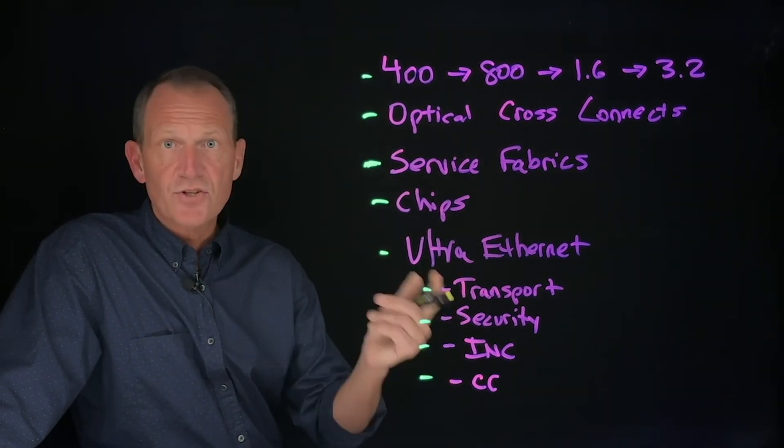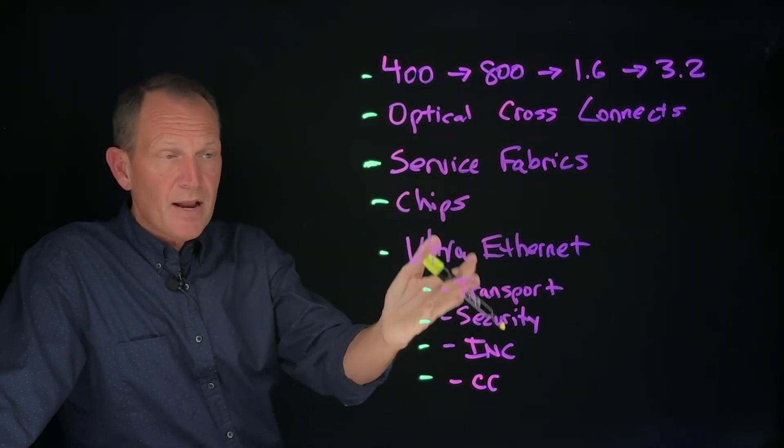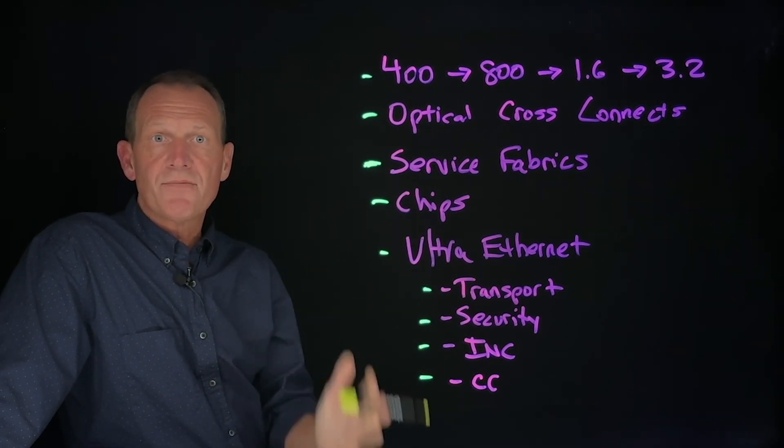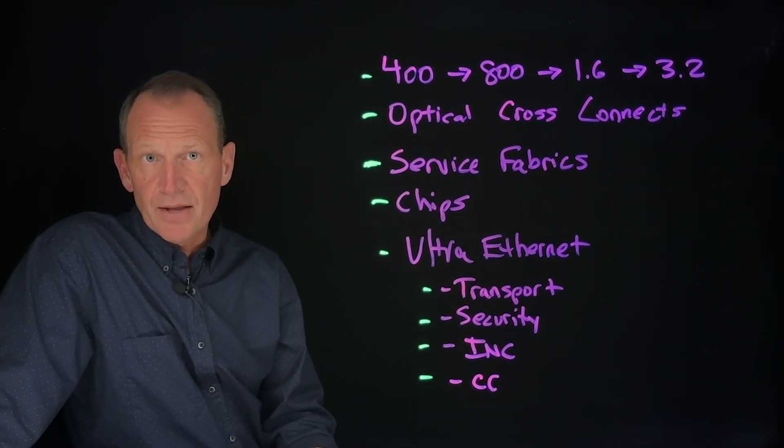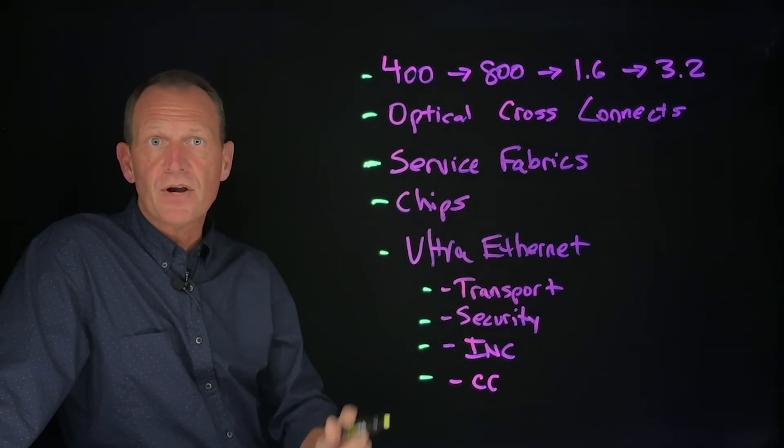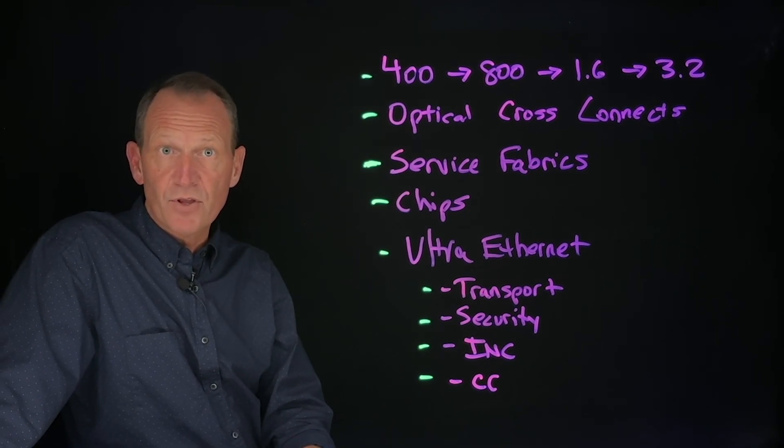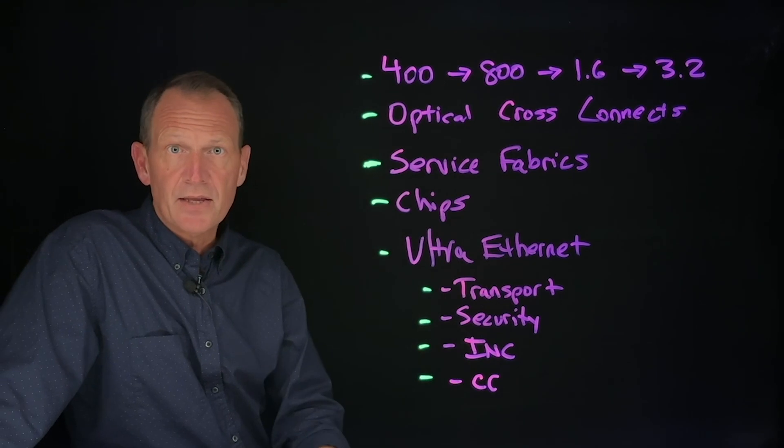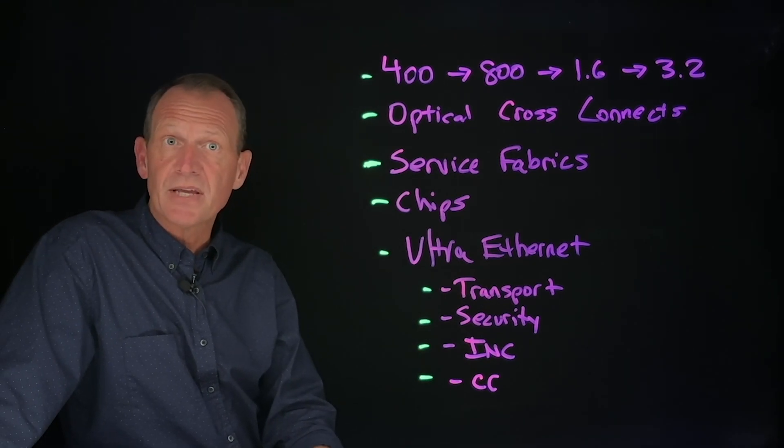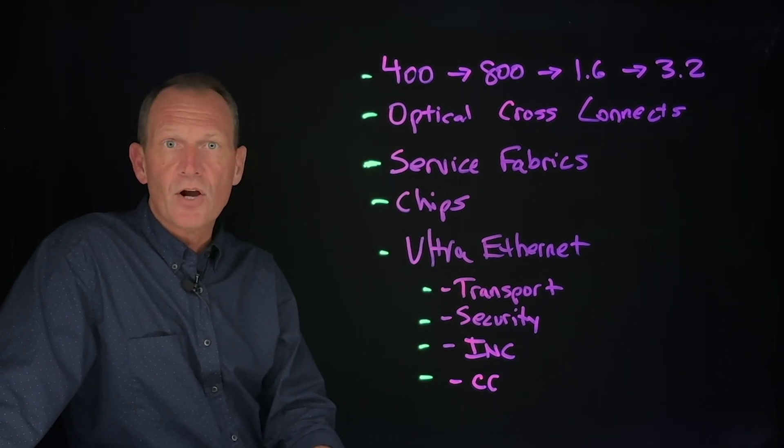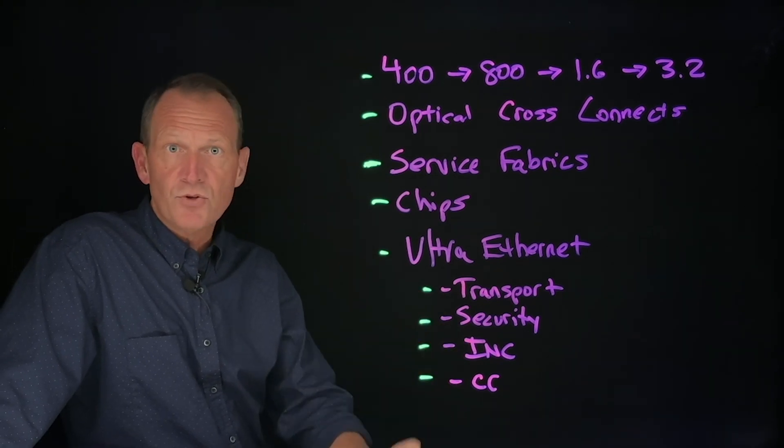And finally, communications collectives. When you talk about having a new transport, you also want to have the right communications collectives around that. I mentioned before that each vendor has their own language in terms of providing for those different types of communications models. Ultra Ethernet is trying to standardize those, bring them together so that everyone can operate on the same set of verbs and communications patterns in the future.